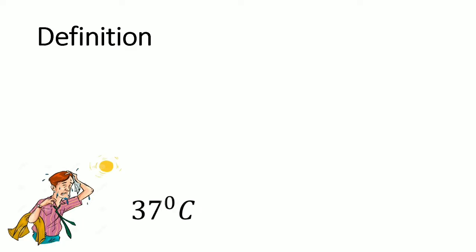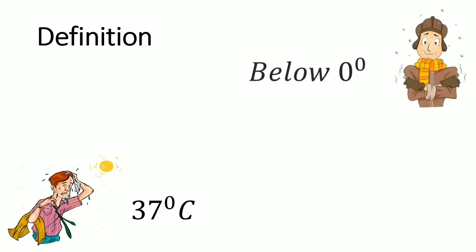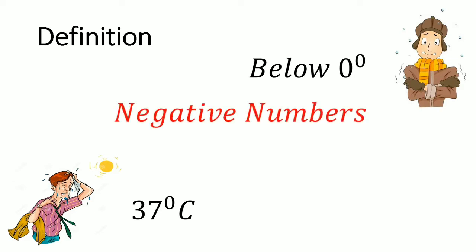Let us assume that you lived in the tropics like I do. On some days you'll be experiencing some extremely hot conditions. However, if you lived in the north, let's say close to Alaska, there are some days you'd be living under some uncomfortably cold conditions, say below zero degrees. Numbers that are below zero degrees are negative numbers. Now we have set the stage to use this experience to explain what integers are.